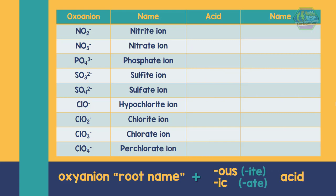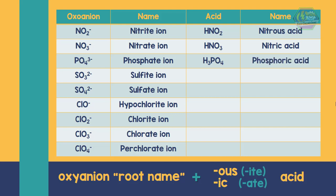For the nitrite ion, the formula of the acid would be HNO₂, and its name is nitrous acid. For the phosphate ion, the formula of the acid would be H₃PO₄, and its name is phosphoric acid.